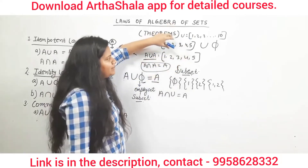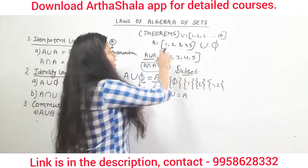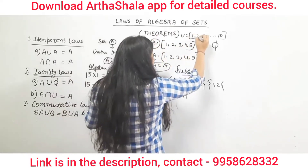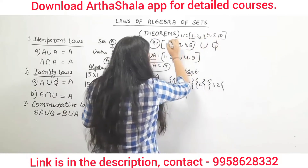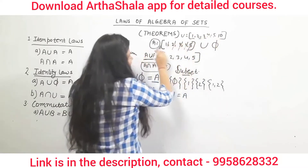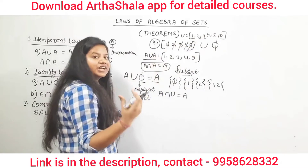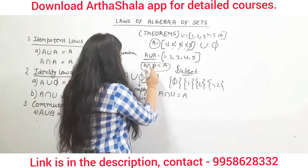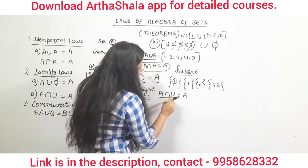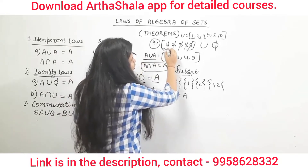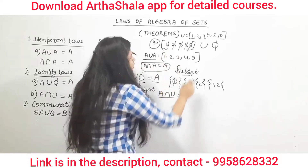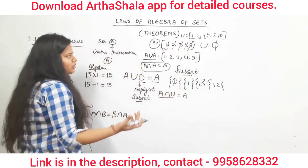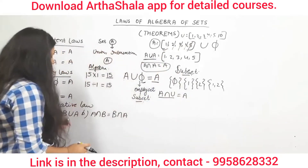The common elements of the universal set and A will be exactly the elements present in A. Let's say the universal set is {1, 2, 3, ... 10}. If we do A intersection U, the universal set contains all elements, so the common elements with A will be the elements of A itself. Therefore, A intersection U equals A.